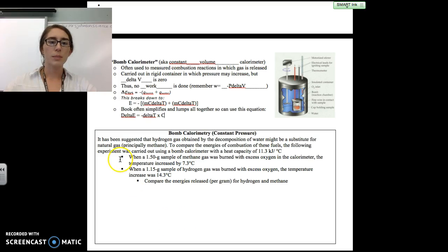There's a simple problem down here comparing combustion of a 1.5 gram sample of methane and a 1.15 gram sample of hydrogen gas in the same calorimeter. They give us the specific heat of the calorimeter, 11.3 kilojoules per degree Celsius, and the temperature change for each combustion reaction. Try working out this problem, and we'll go over the answer at the beginning of the next class. Bye.